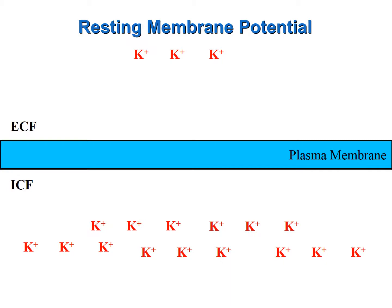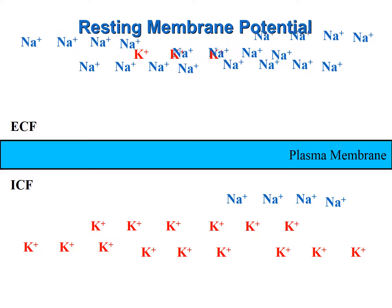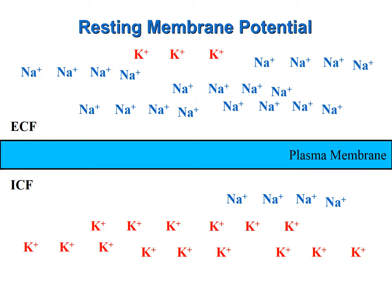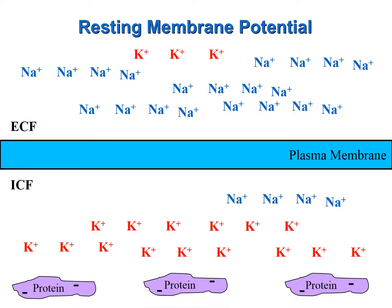If we look at the concentration of sodium ions, we find that the opposite is true. There is a greater concentration of sodium ions in the extracellular fluid compared to the intracellular fluid. And the sodium ions in the extracellular fluid outnumber the potassium ions in the intracellular fluid. So when we add up all of the positively charged potassium and sodium ions in the extracellular fluid, there is a greater concentration compared to those in the intracellular fluid. In addition, there are negatively charged molecules in the intracellular fluid, such as proteins and amino acids. This makes the extracellular fluid more positive compared to the intracellular fluid.